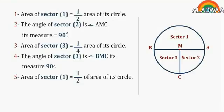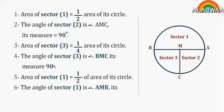Number 5: Area of sector 1 equals half the area of its circle. Number 6: The angle of sector 1 is AMB. Its measure equals 180 degrees.